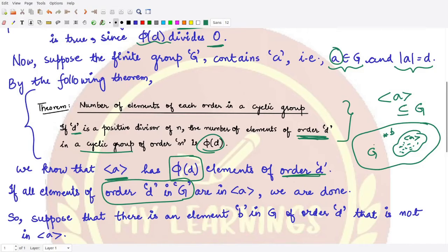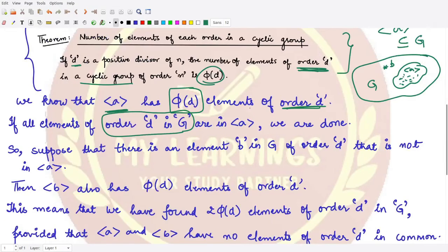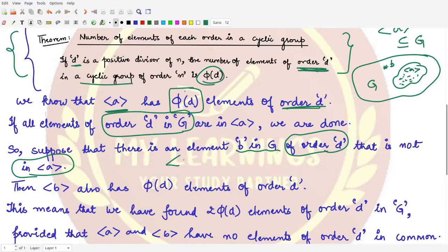Suppose there is some element b in G which is also of order d and is not present in the subgroup generated by a. Then, applying the same theorem to element b, we construct the subgroup generated by b, and for this subgroup it also has φ(d) elements of order d.